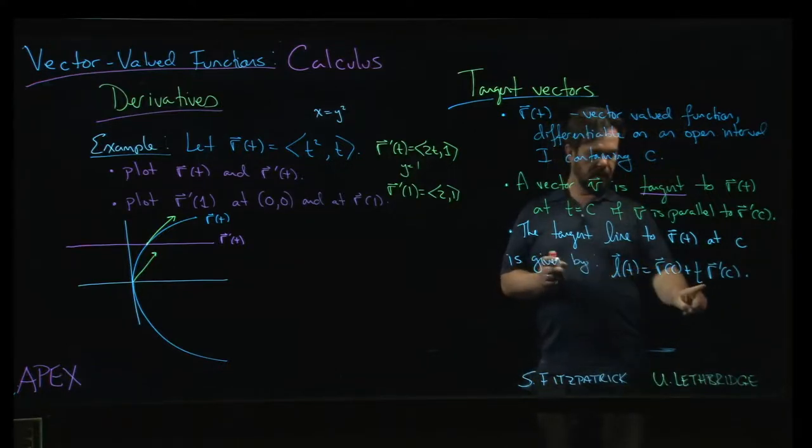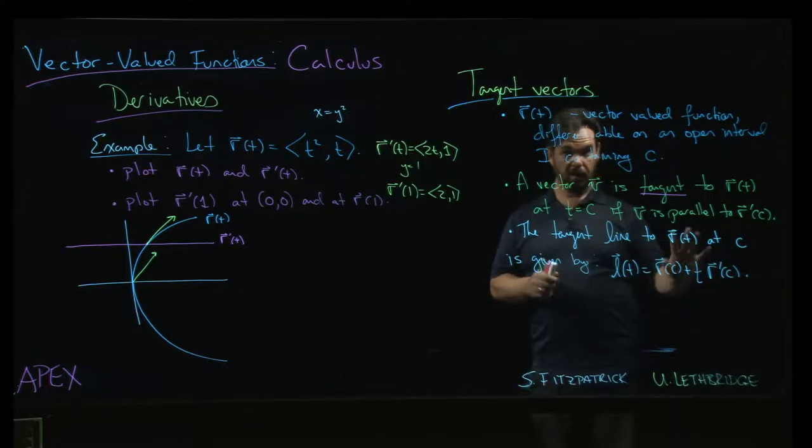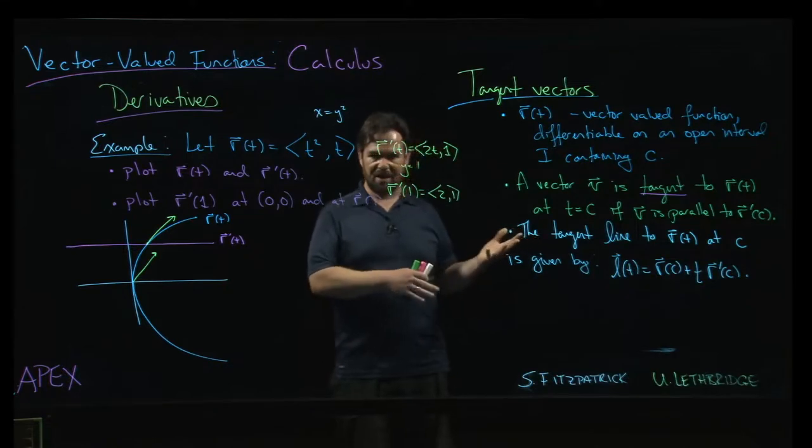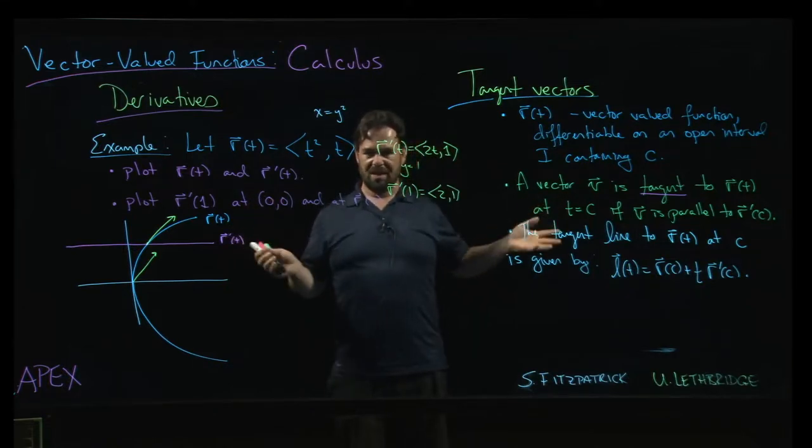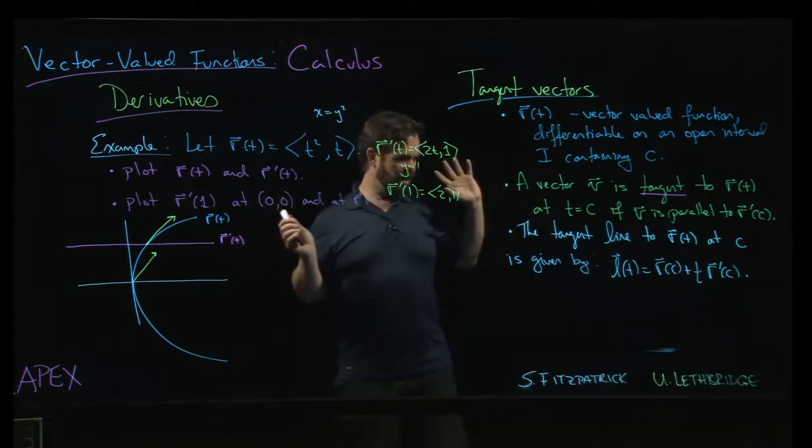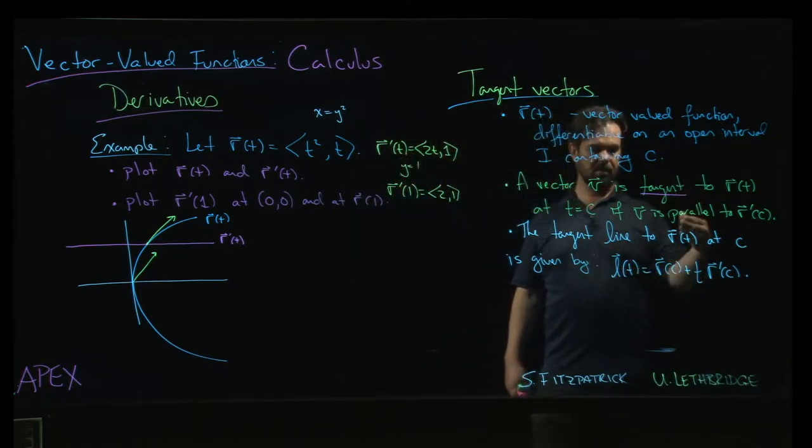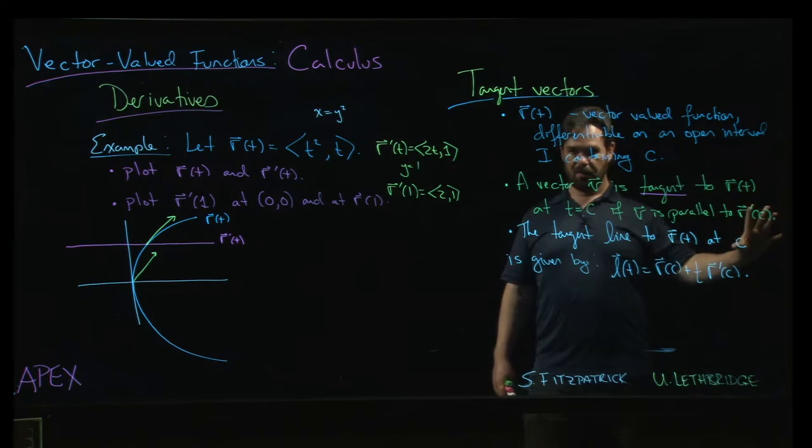And now, be careful that this t here, this is now the parameter for the line. It's not the parameter for the original vector-valued function. So maybe I shouldn't use the same letter. We're used to always using t for these, but if you want to avoid confusion, maybe you want to use s for the line parameter and save t for the vector-valued function parameter, and that's going to work too.